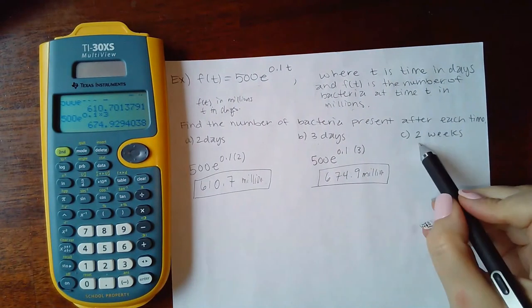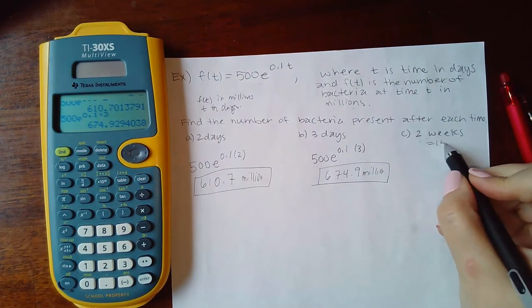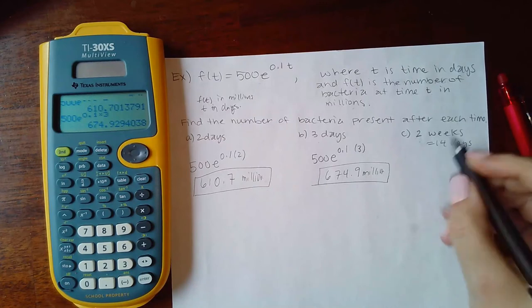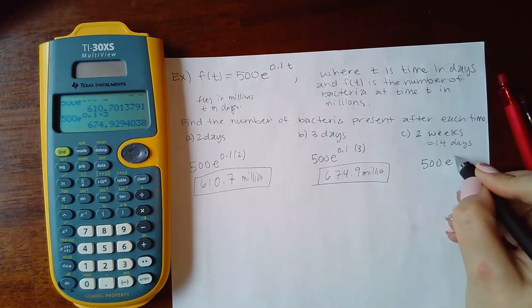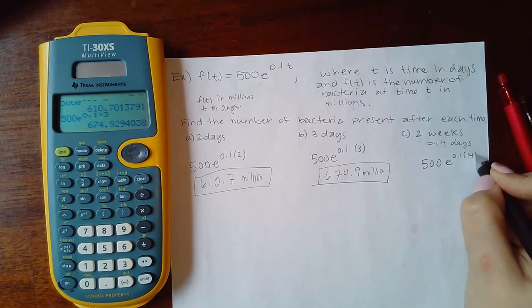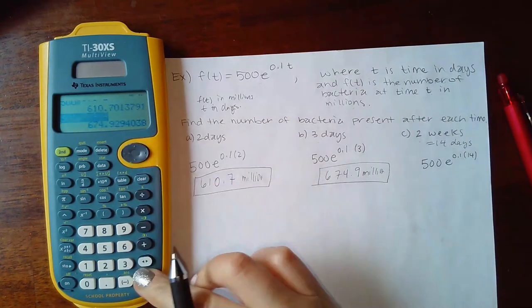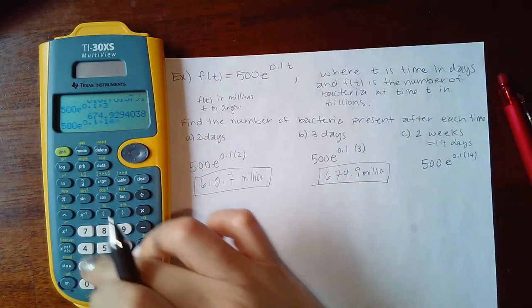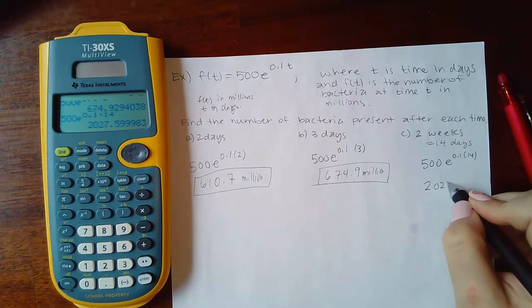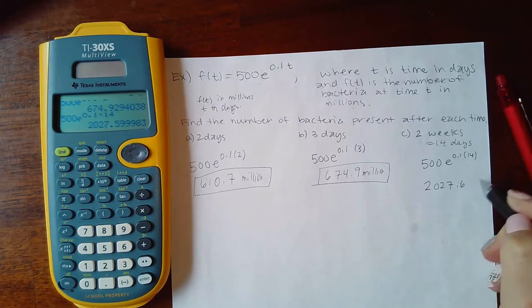And then now two weeks, well how many days is that? That's 14 days, right? So we're going to just plug in 14. And so I can go back and copy that and just change the three to 14. And I get 2027.6 million.